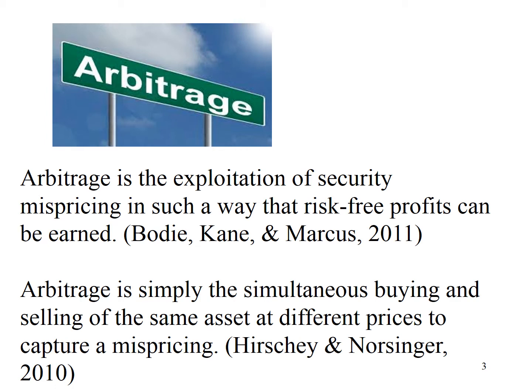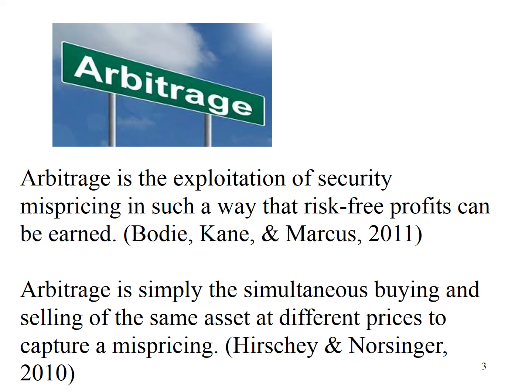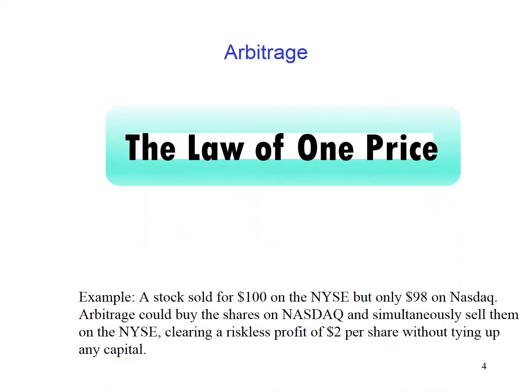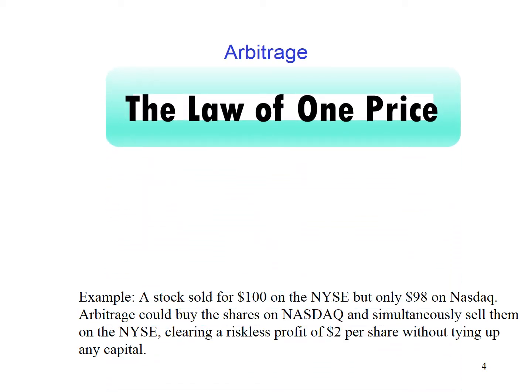According to the definition of Bodhi, Kane and Marcus in 2011, arbitrage is the exploitation of security mispricing in such a way that risk-free profits can be earned. According to Herschel and Nosinger in 2010, arbitrage is simply the simultaneous buying and selling of the same assets at different prices to capture a mispricing. The law of one price states that two equivalent assets should have the same market price. An arbitrage opportunity would arise if the same assets are sold for different prices at two different locations.